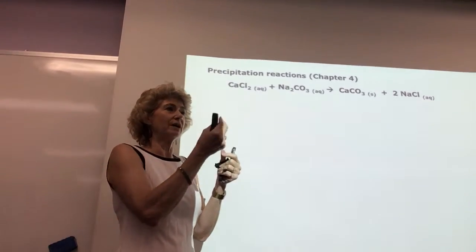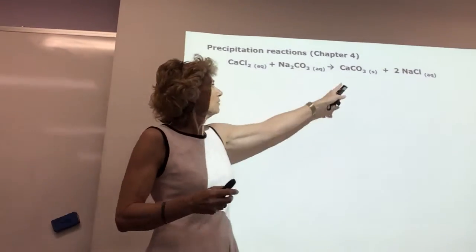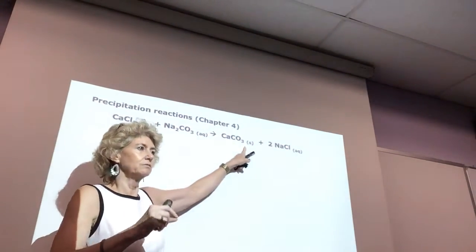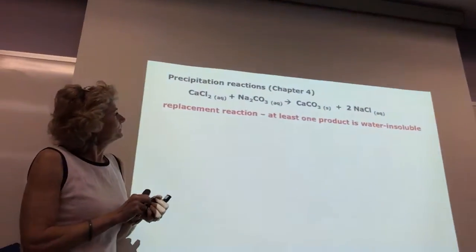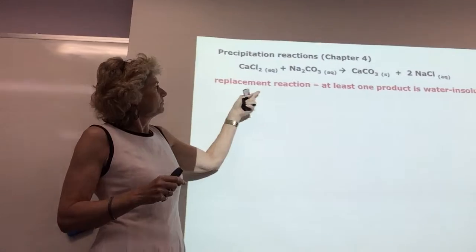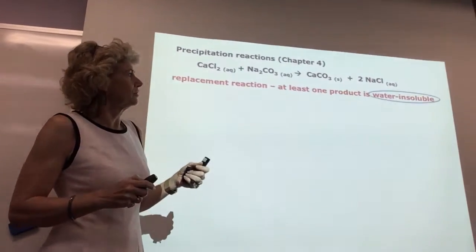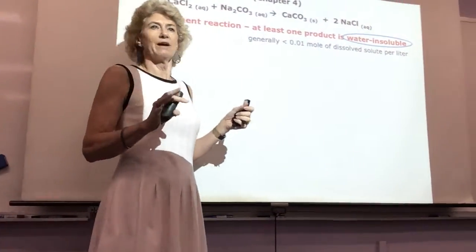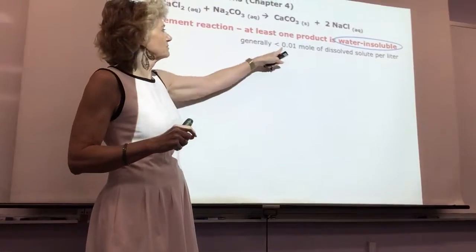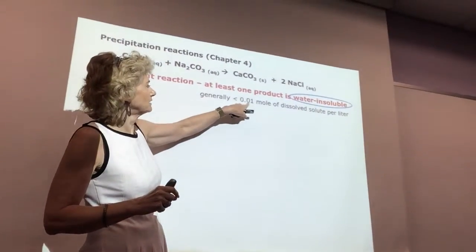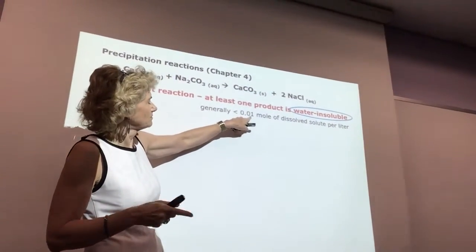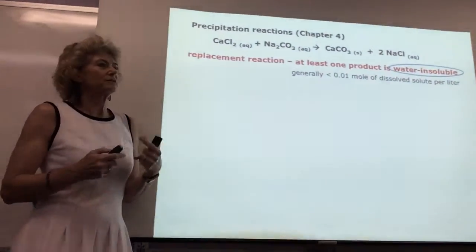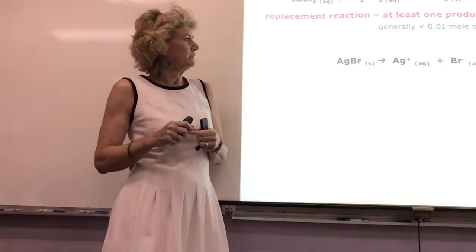So you have two little bottles. You mix them together and a precipitate forms — a white powdery looking thing that will settle out. In a double replacement reaction, one product is insoluble, which by definition means less than 10⁻² moles of dissolved solute per liter. You'll see some kind of precipitate happen.